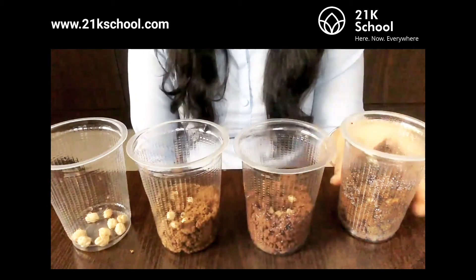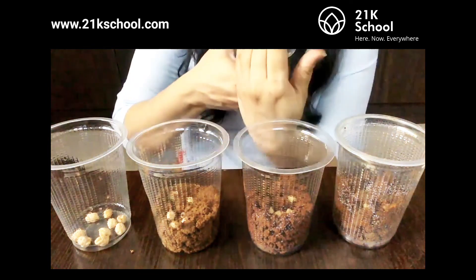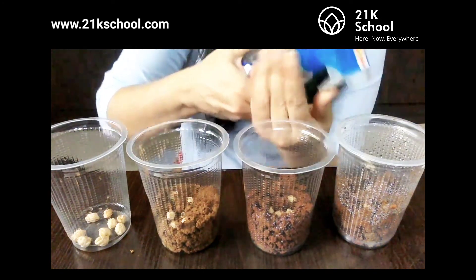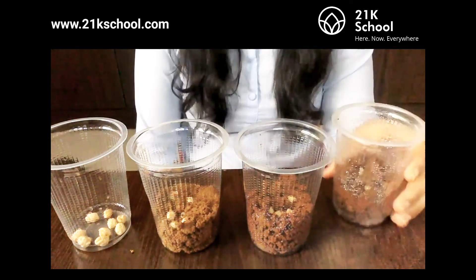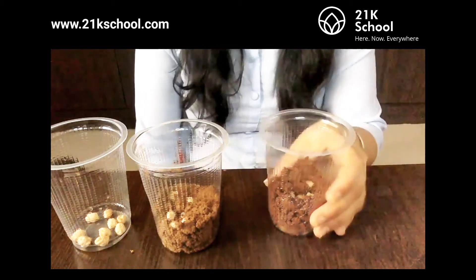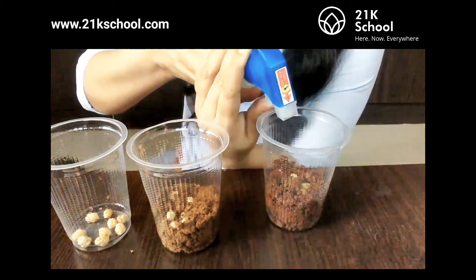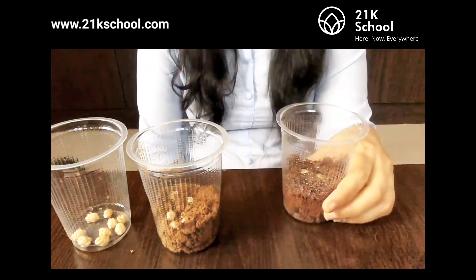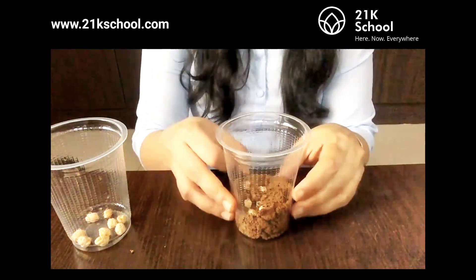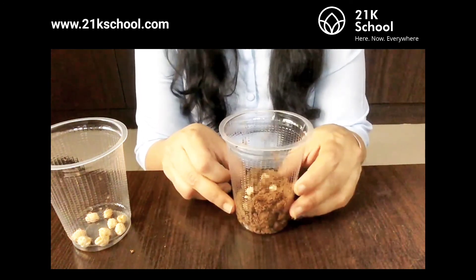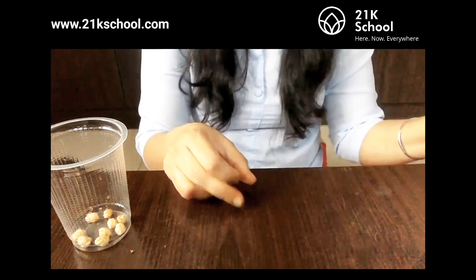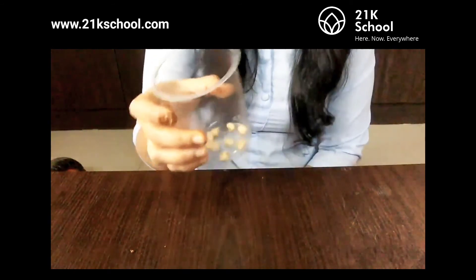Now we set up four different conditions. The first glass gets water daily and will be kept outside in the sun. The second glass gets water but will be kept in a very dark place with no sunlight at all. In the third glass, we have soil and a seed but will give neither water nor sunlight. The last glass has seeds placed just like that without any soil.